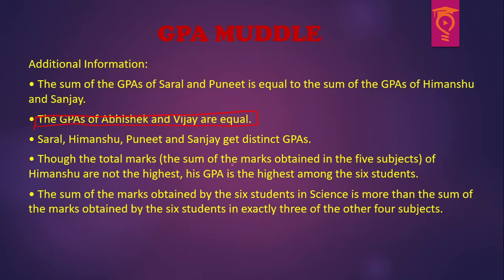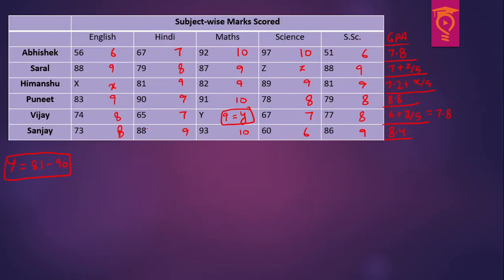The second piece of information is that the sum of GPAs of Saral and Puneet equals that of Himanshu and Sanjay. Saral has 7 plus small z by 5, and Puneet is 8.8; this equals Himanshu's GPA plus Sanjay's GPA. Solving the entire equation gives that small z plus 1 equals small x. So if z is 5, x is 6; if z is 7, x is 8, and so on.